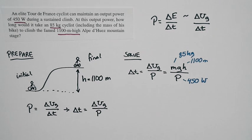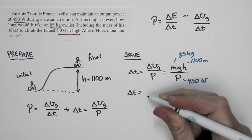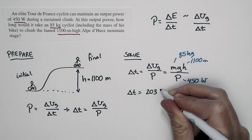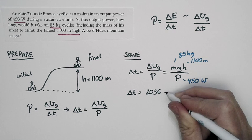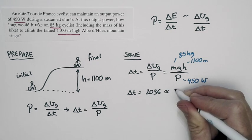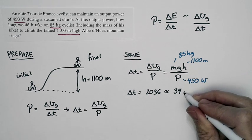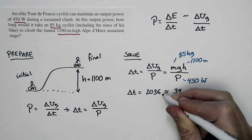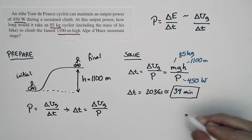Net result, we have everything we need to solve for the time interval. And when we do this, we get a time interval of 2,036 seconds. And then we're going to put that in minutes. We'll do two significant figures because this is a two significant figure problem, and we end up with 34 minutes. 34 minutes for the climb.